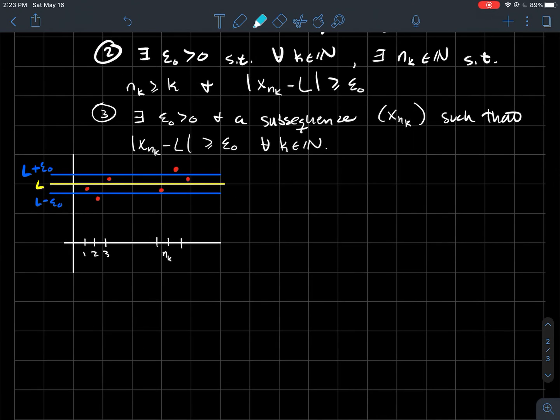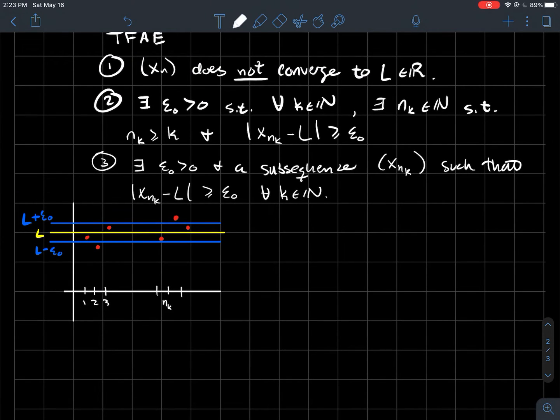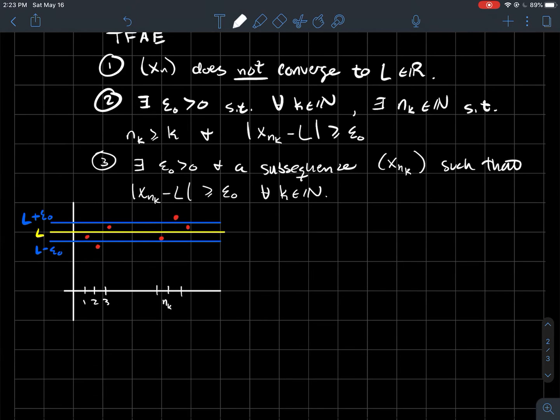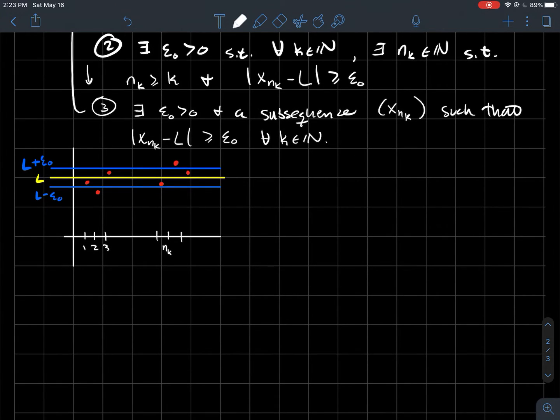So I won't prove each of these. How you would prove these though, in case you needed to, you'd probably do something like 1 implies 2. You'd prove that. Then you'd prove 2 implies 3. And then the last thing you'd do is prove 3 implies 1. And then that would show that all three of these are equivalent. So in case you have to do that for maybe a different class, or maybe later in this class. But I'll skip that here.